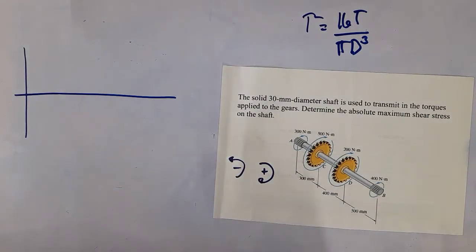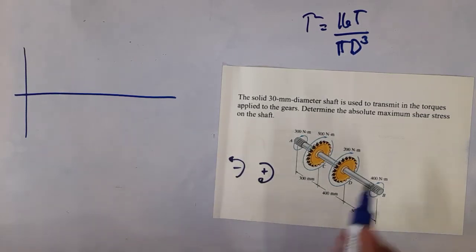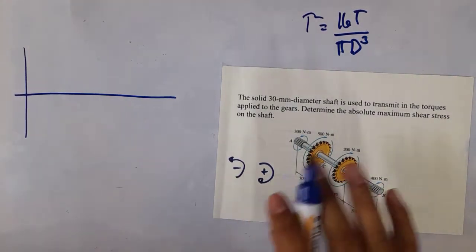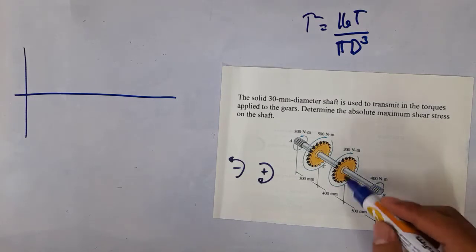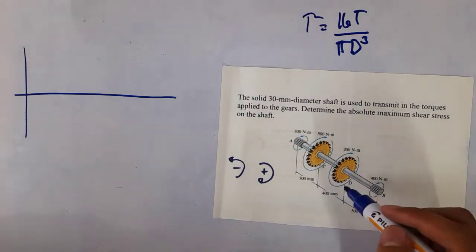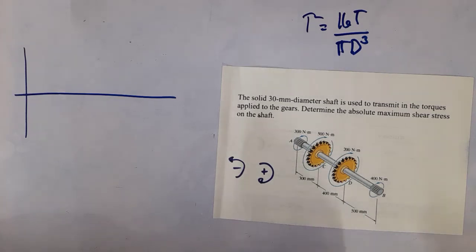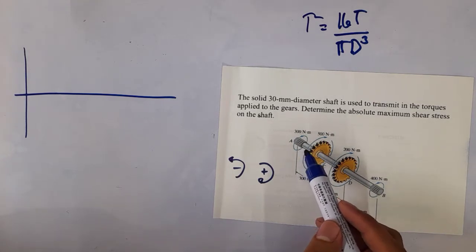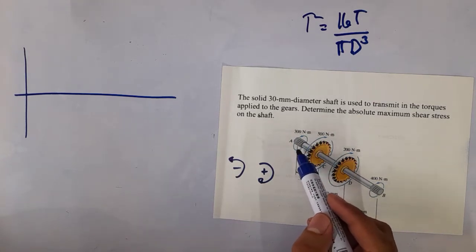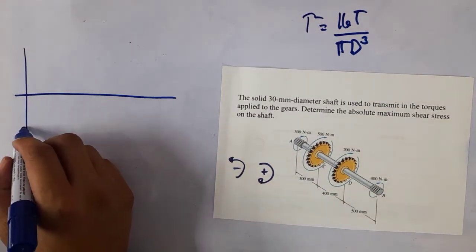Referring to our introduction to torsion — also uploaded on this channel — for our derivation, this is the sign convention that was used. If you remember the angle of twist, the angle of twist is in the clockwise direction. So for consistency in signs, this is our sign convention. In this particular section, we have 300 Newton meters which is counterclockwise, so it is negative — we have negative 300.